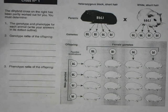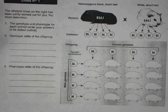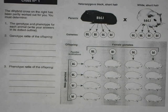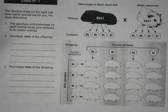Today we're going to learn how to complete a dihybrid cross. A dihybrid cross is looking at two traits at the same time rather than just one. We're going to use guinea pigs with different fur color and hair length to get an example of dihybrid crosses.